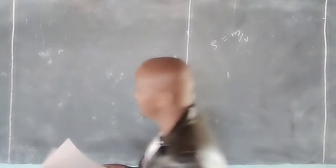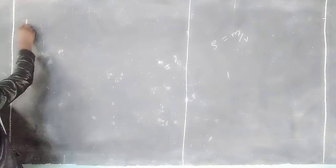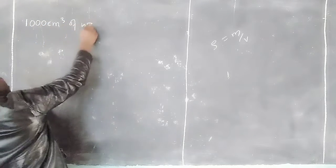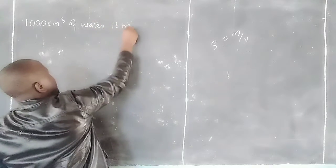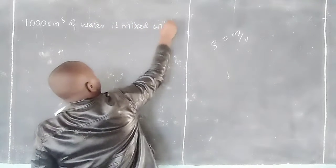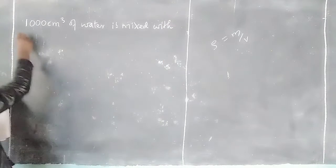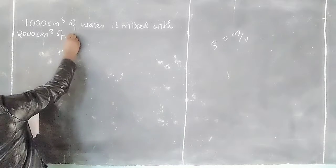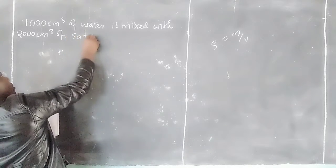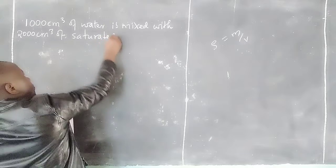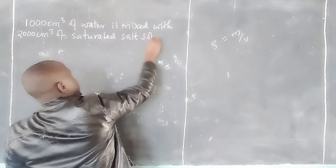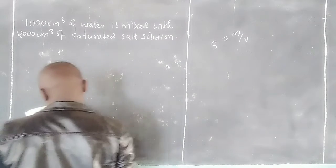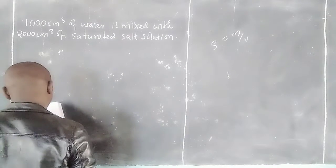Taking an example will help us understand densities of mixtures better. The question involves 1000 cubic centimeters of water mixed with 2000 cubic centimeters of saturated salt solution. We are then told that the density of the salt solution is given.